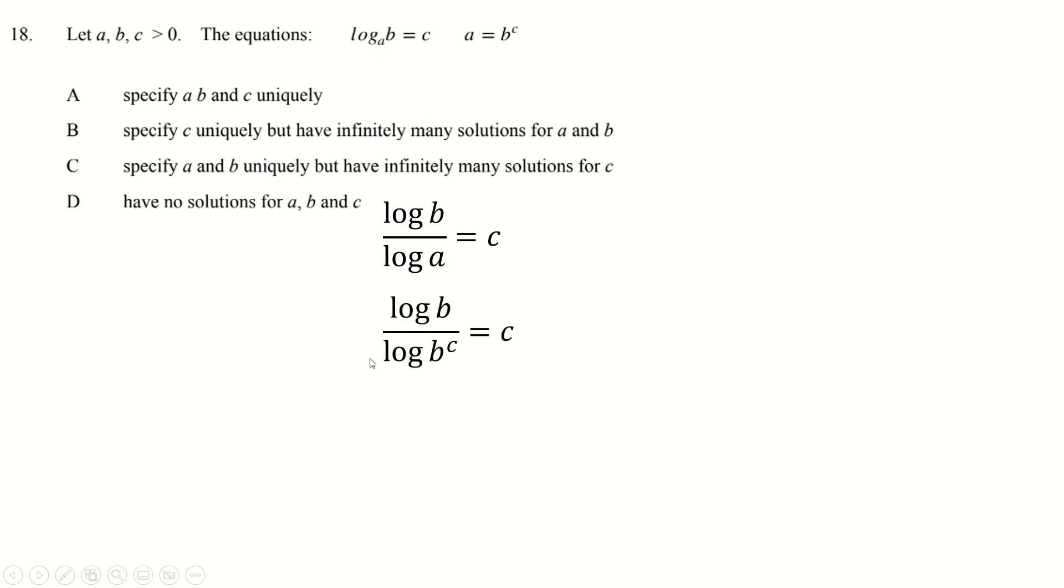But A is just B to the power C. And then I put C at the front here by the power law. And then you can just cancel out the log B's and you get 1 over C equals C, which means 1 equals C squared. The only solution to that while C is bigger than 0 is 1. So C is definitely 1 and it's unique. Now A and B aren't because if C is 1, of course, looking at this equation, anything equals itself to the power 1. And likewise, log to the base anything of anything is 1 as long as those things are greater than 0, I guess. So we'll go with the answer of B. C is unique, but A and B are not.